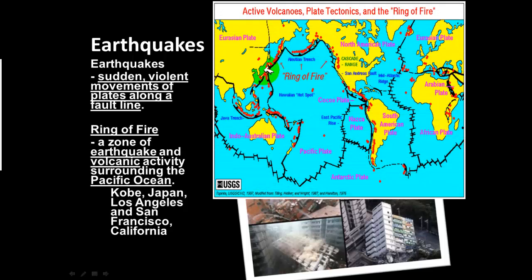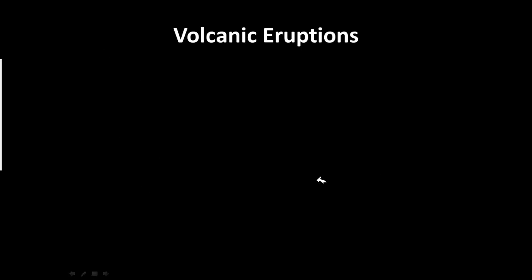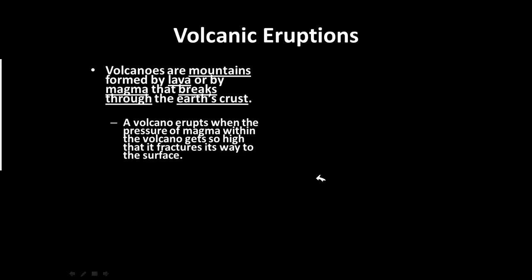This graphic shows the Ring of Fire — this ring of earthquakes and volcanoes going from Japan to the United States. It's a line of active volcanoes, earthquakes, and fault lines.